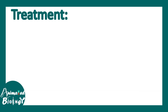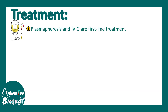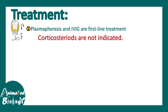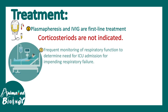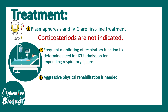Treatment includes plasmapheresis and intravenous immunoglobulins as the first line. Corticosteroids are not usually indicated. Frequent monitoring of respiratory function is essential to determine the need for ICU admission in case of impending respiratory failure. Aggressive physical rehabilitation is also needed.